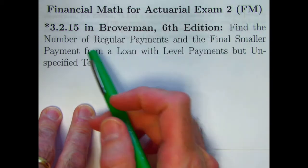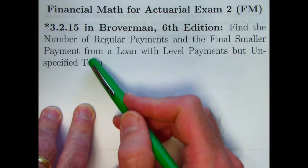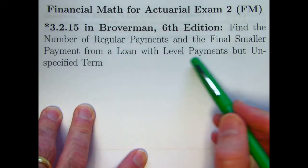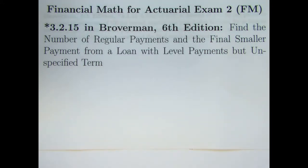This is a problem where we'll be doing two things. We'll be finding the number of regular payments and the final smaller payment from a loan that's got level payments but unspecified term. Usually we know the term and want to figure out the payments. Here we know the regular payments but want to figure out what the term is.